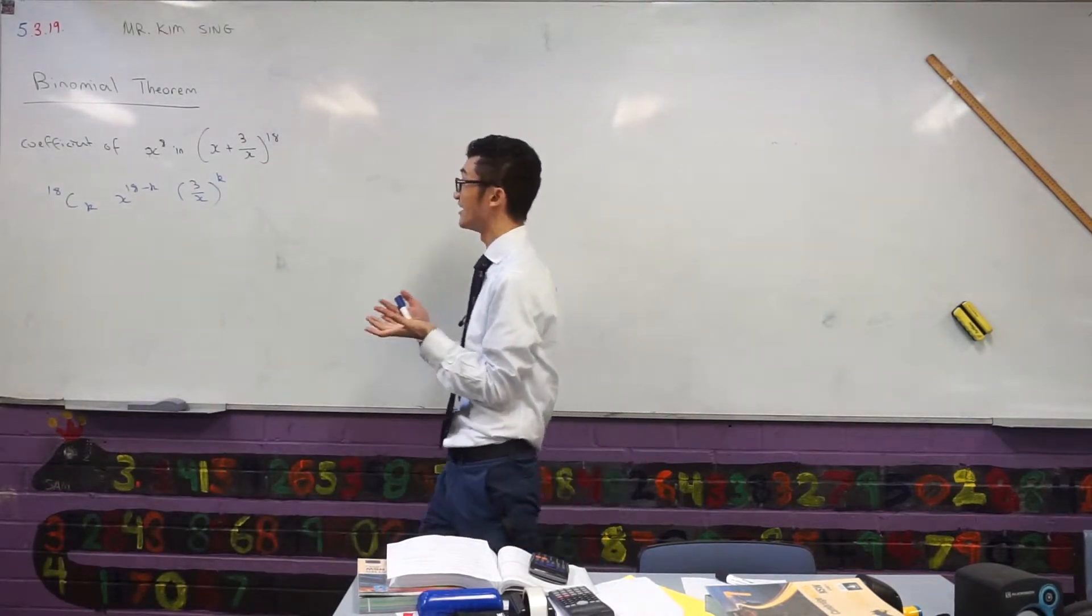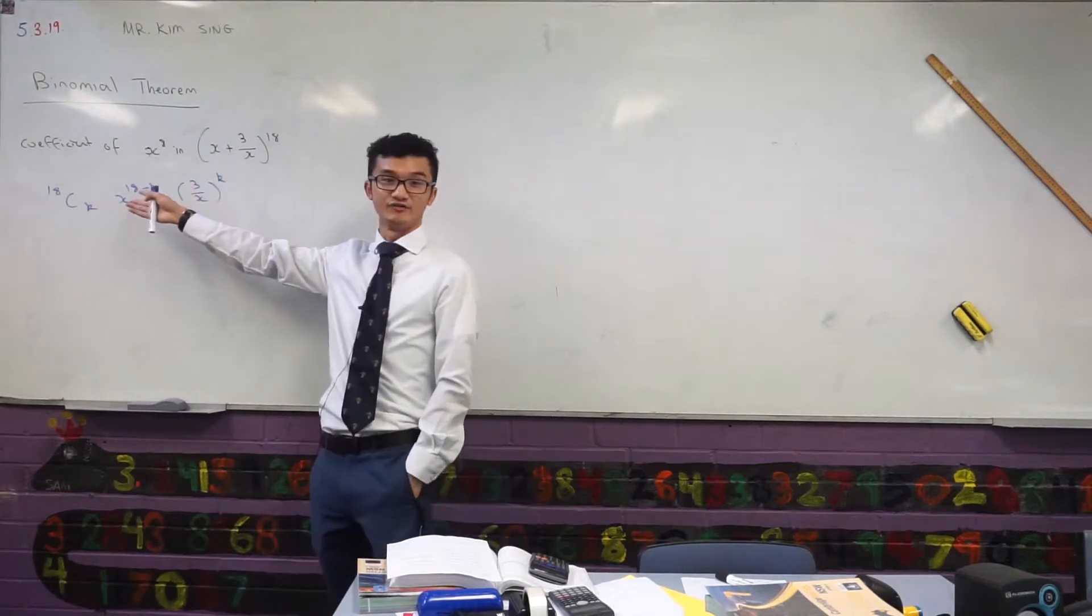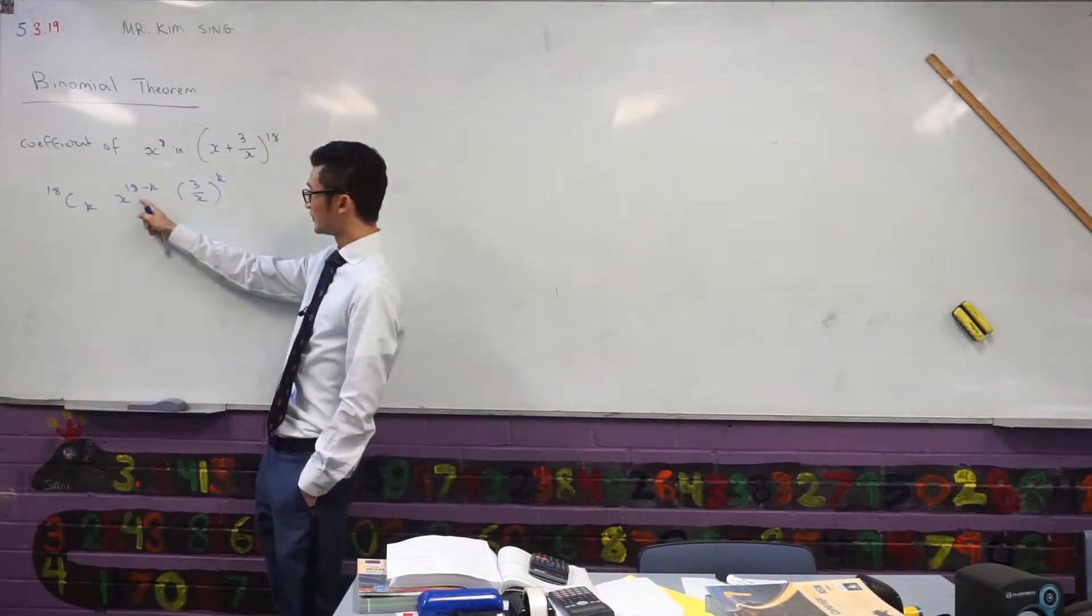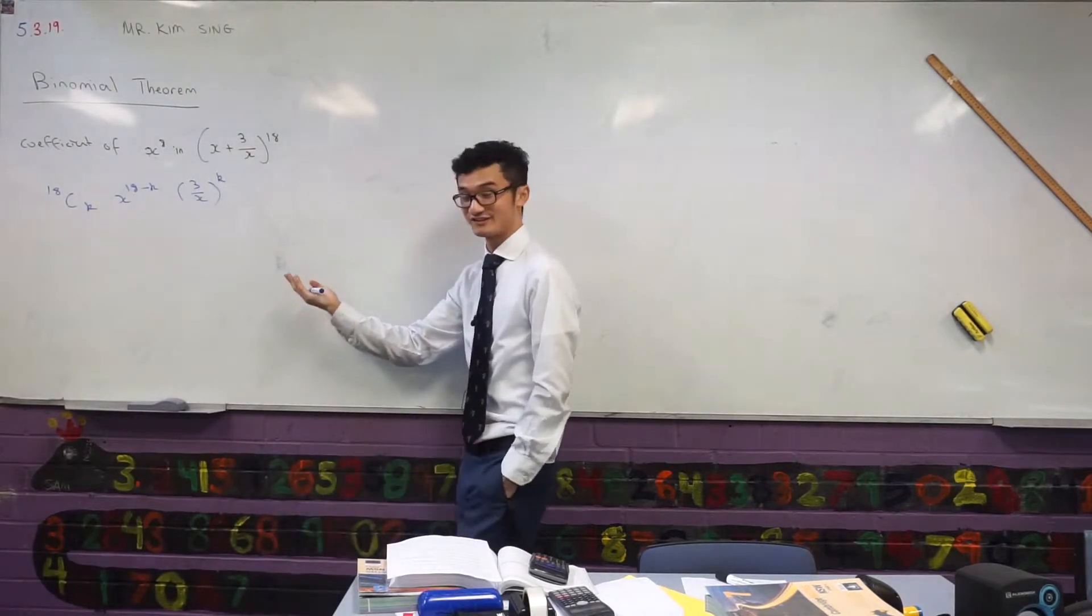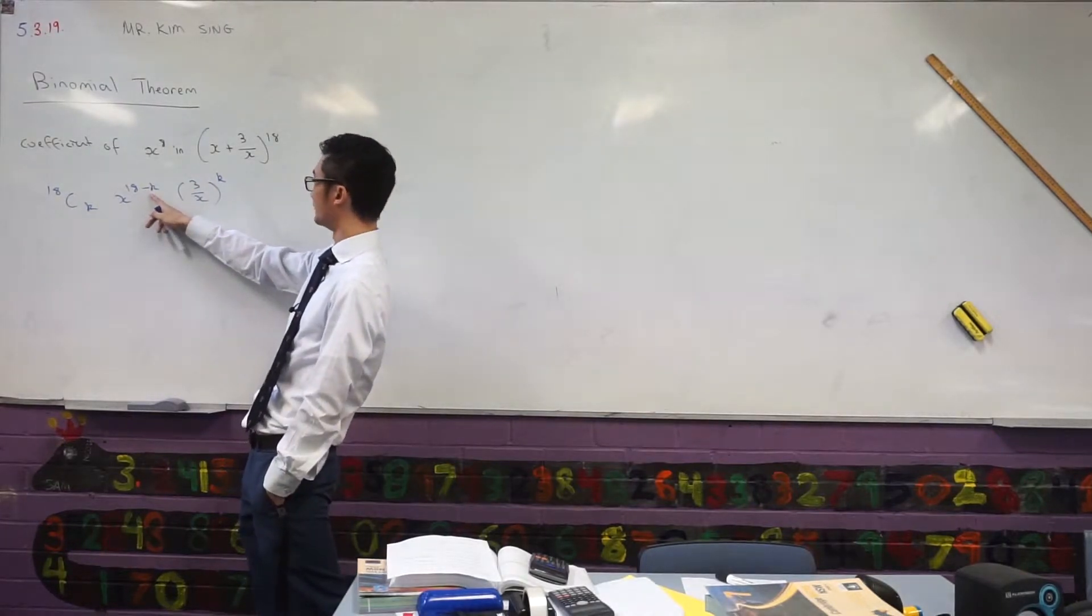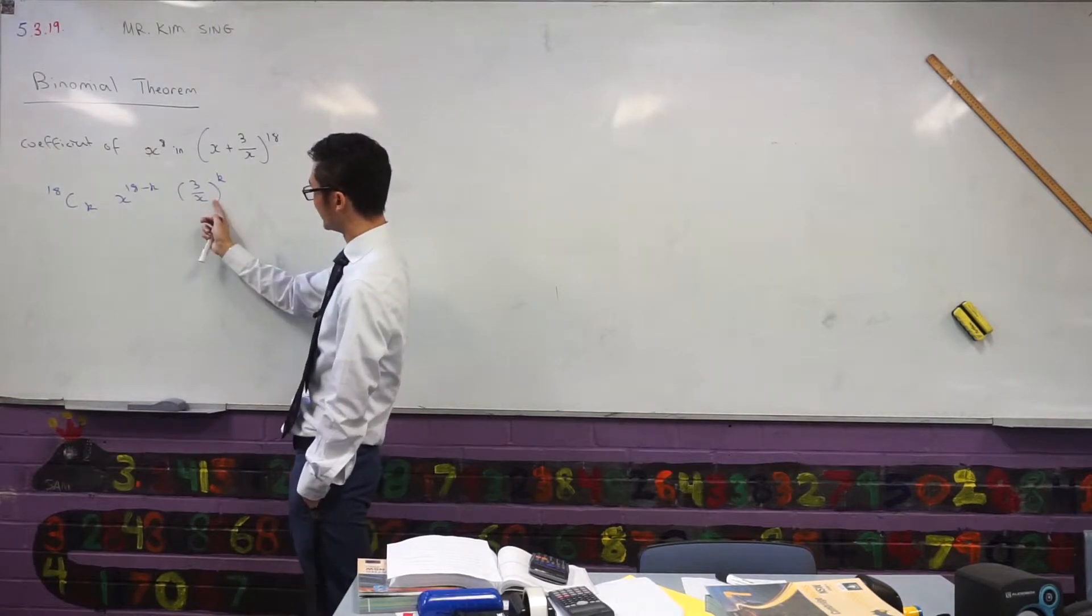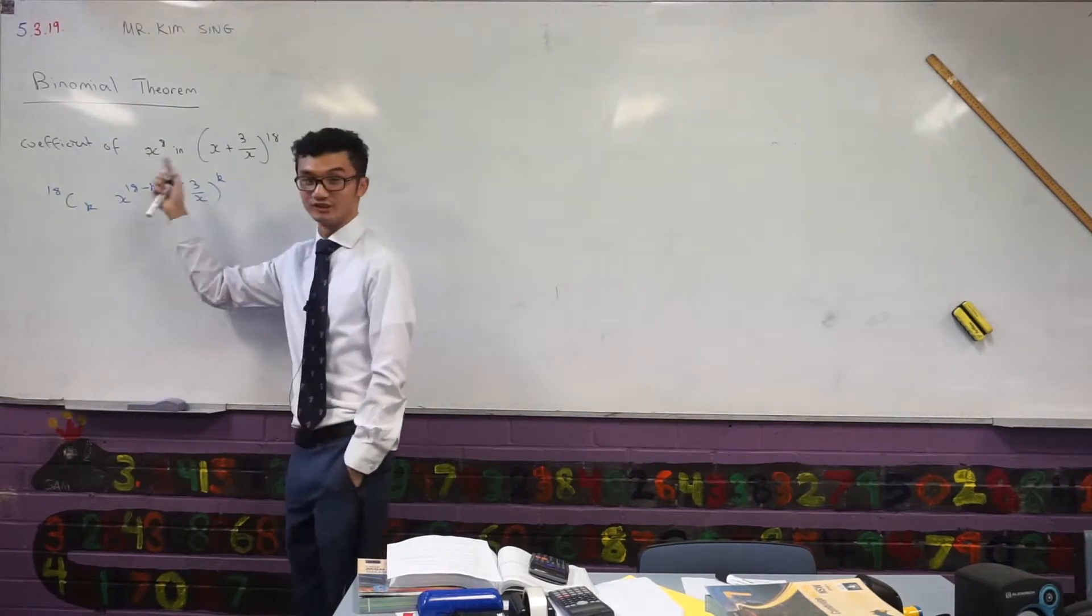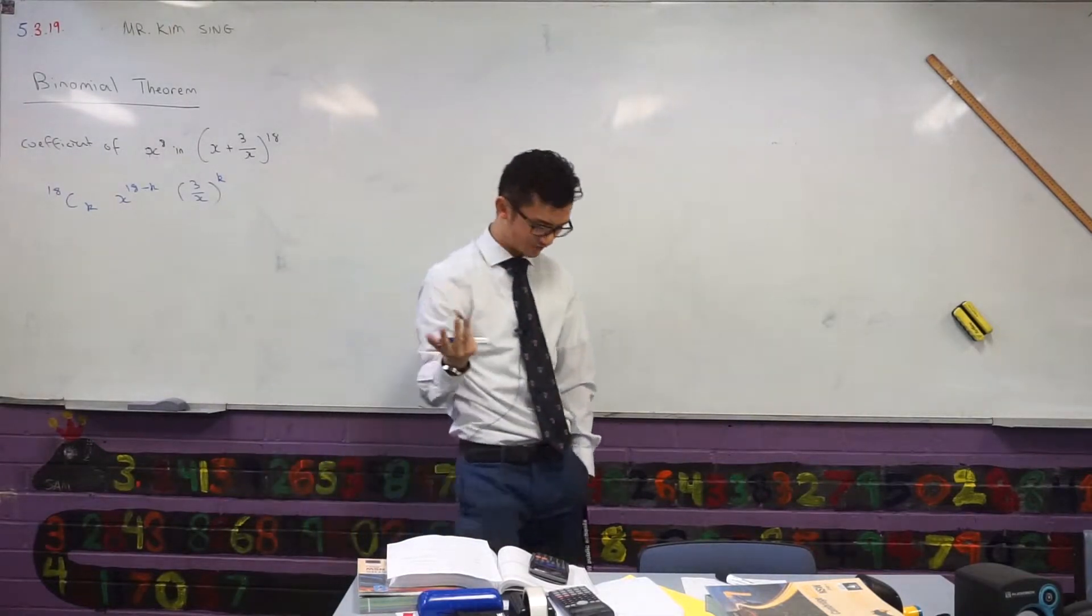Now usually we can just choose a k value and say well, if I want x to power 8, I can try and find that here. The problem with this one is that both of these terms have x, so that's a bit tricky because I'm going to say oh here we'll let k equal to 10. Oh, sorry. Yeah, k equal to 10 and then I'll do the same for here because when you actually multiply this out, that's not going to work out. You won't get x to power 8 in that case.